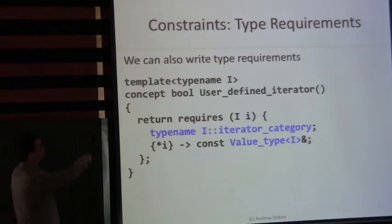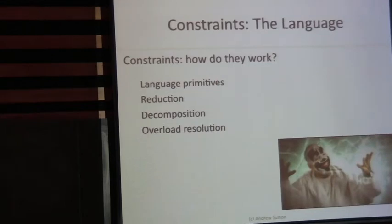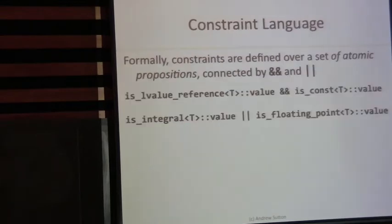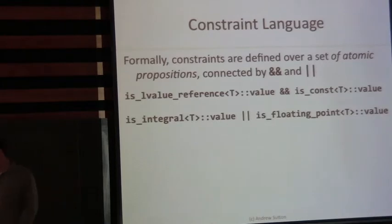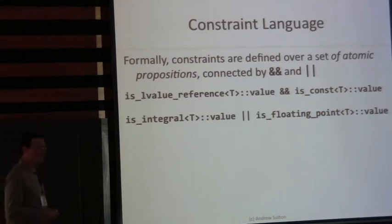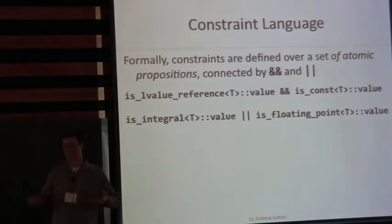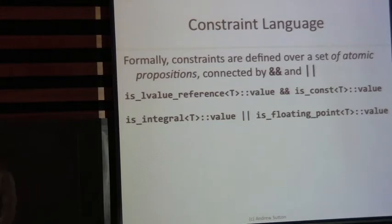This is basically all of Concepts Lite from the language talk perspective. I will start by saying that this is not just constexpr — the idea that constraints are represented as constant expressions is not quite adequate. There is a formal constraints language that constraints are actually written in, which is really just a set of atomic propositions connected by and and or. This is our constraint language — a subset of propositional logic.